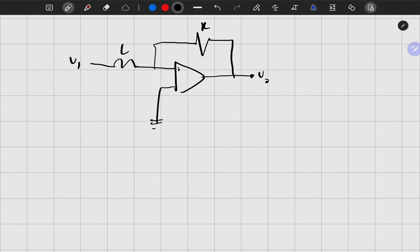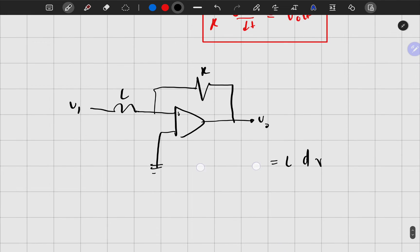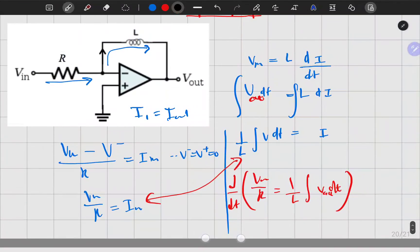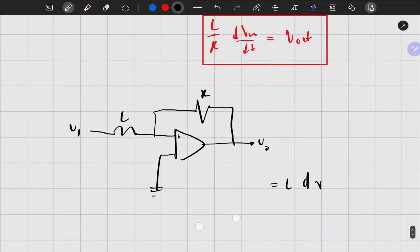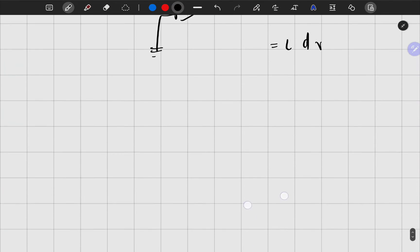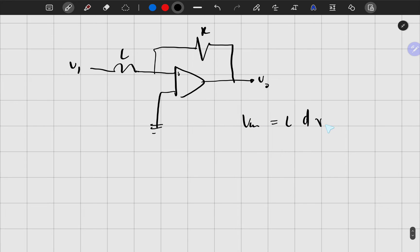Okay, so current going in, we said V_in should be close to some inductor, and then that'll be my voltage equation. Oh yeah, it's D current.